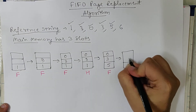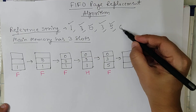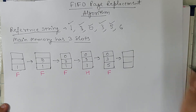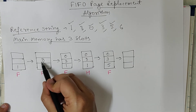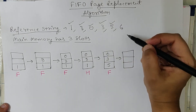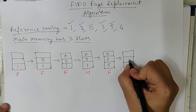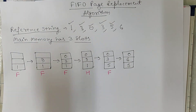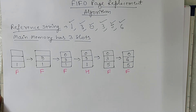Now CPU wants to execute page number 6. Page 6 is not present in main memory so we need to replace one of the pages — 0, 3, or 5. According to FIFO, page 3 came first after page 1, so page 3 is replaced by page 6. The memory now holds 0, 6, and 5. Page fault occurs because page 6 was not in main memory. Whatever page came first will be replaced when main memory is full.